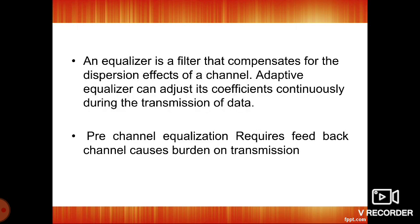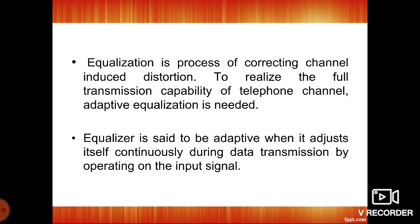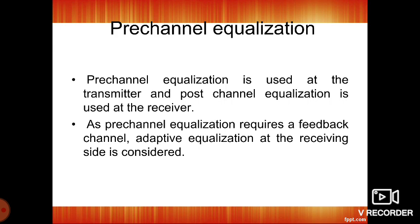An equalizer is a filter that compensates for the dispersion effects of the channel. The adaptive equalizer can adjust its coefficients continuously during the transmission of data. Pre-equalization requires a feedback channel, which causes a burden on the transmission. Post-equalization is done at the receiver side. The equalizer is said to be adaptive when it adjusts itself continuously during data transmission — depends upon the data, the equalizer adjusts itself, with no need for manual adjustment.